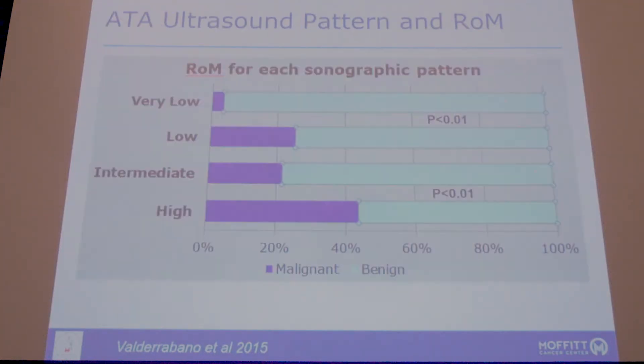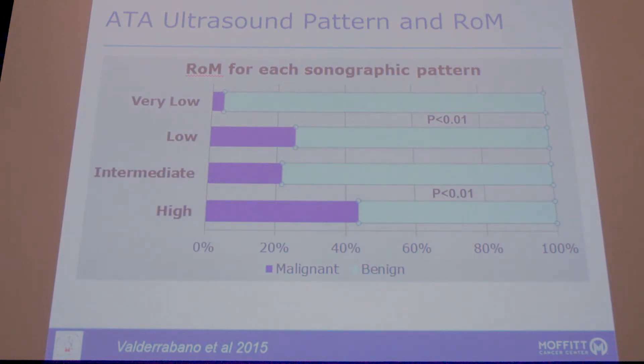Risk of malignancy stratification begins with ultrasound. These patterns are correlated with risk of malignancy, all the way from a pure cyst which is always benign, up to 70 to even 90 percent risk of cancer in certain ultrasound patterns. In our experience at Moffitt Cancer Center, the ultrasound pattern itself is a reasonably accurate predictor of malignancy risk, with a very low suspicion pattern being associated with only about a three percent chance of cancer.